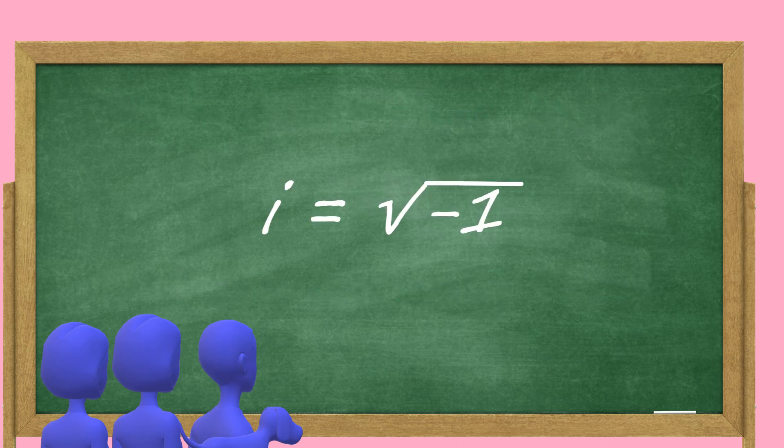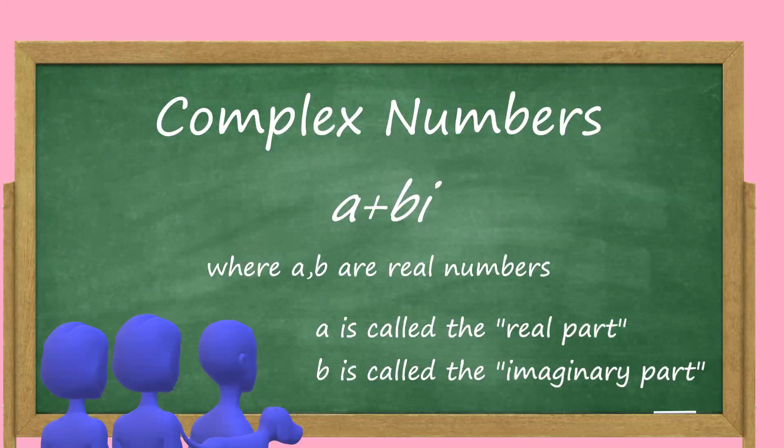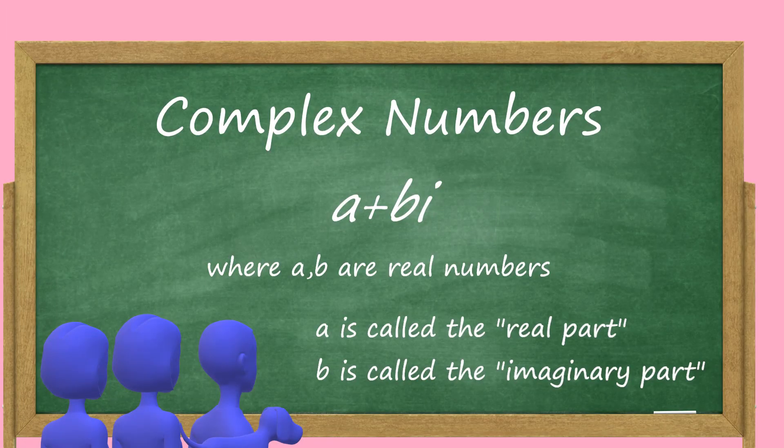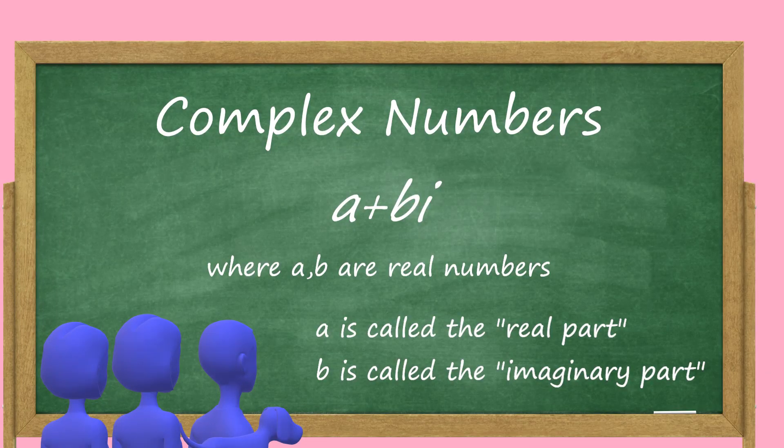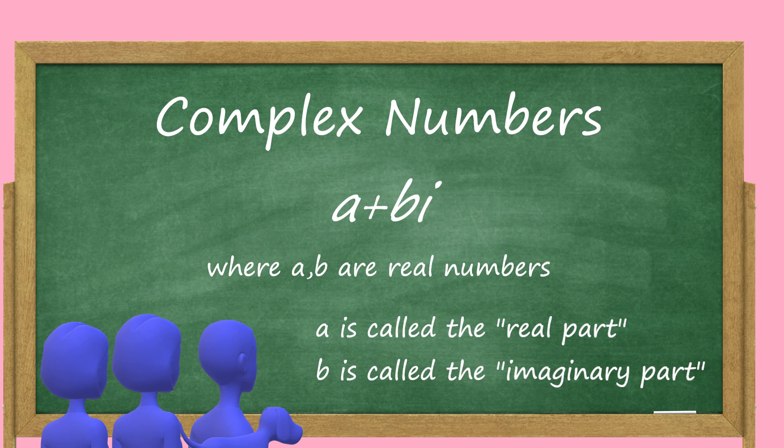The number i is the square root of negative one, and the complex number system is made up of numbers a plus bi, where a is the real part and b is the imaginary part. Any number with a equals zero and b non-zero is called purely imaginary, and any number with b equal to zero is called real.